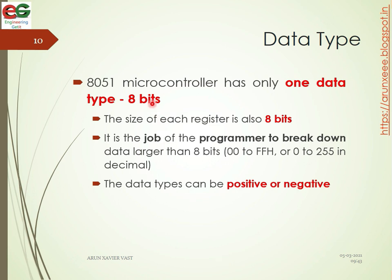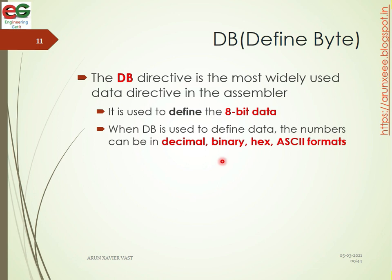The programmer's job is to break down data larger than 8 bits. Data types can be positive or negative. The Define Byte directive, DB, is the most widely used data directive in the assembler. When DB is used to define data, numbers can be in decimal, binary, hex, or ASCII format.